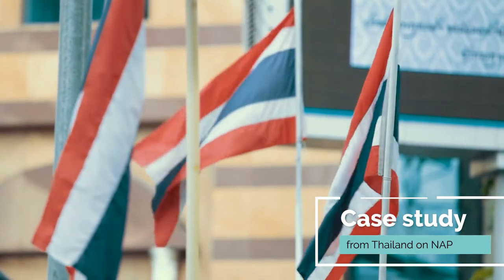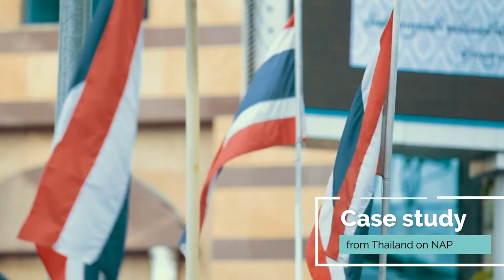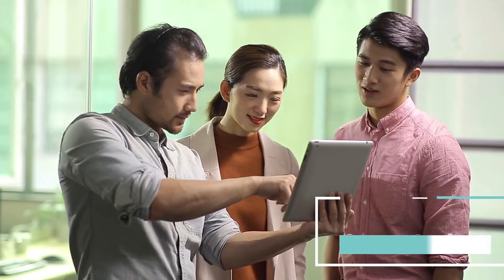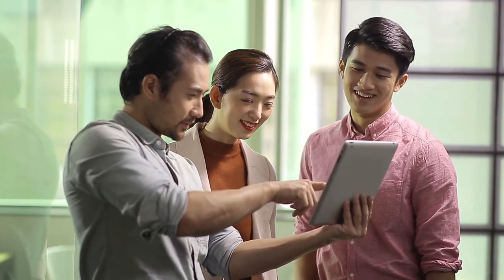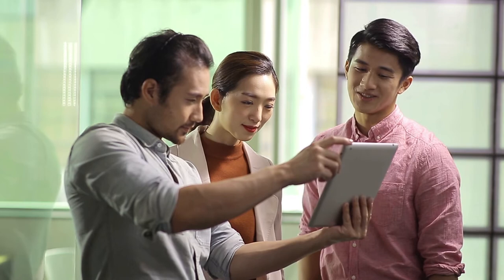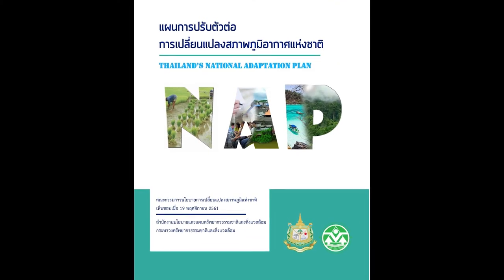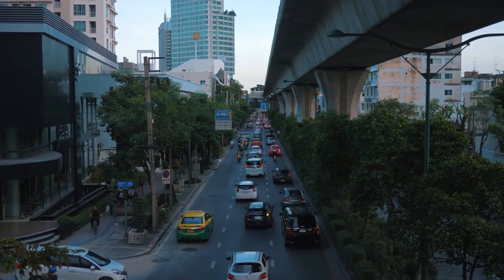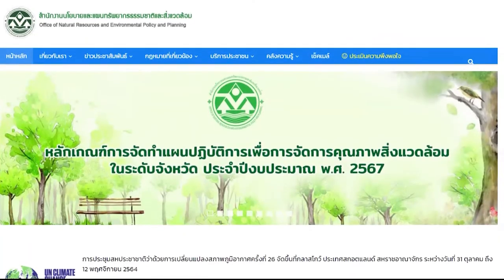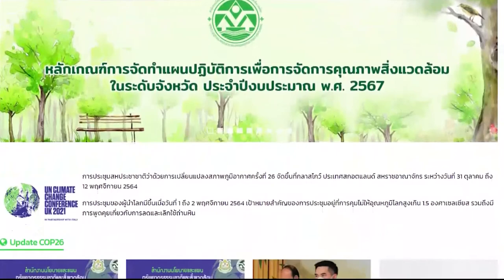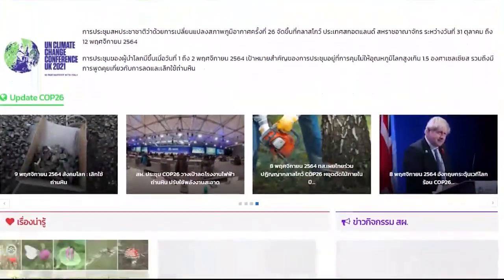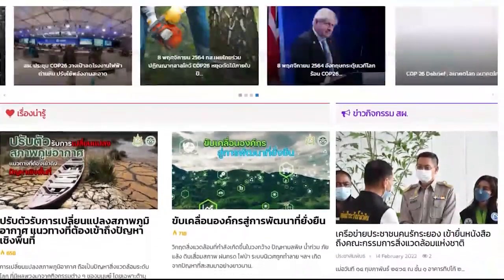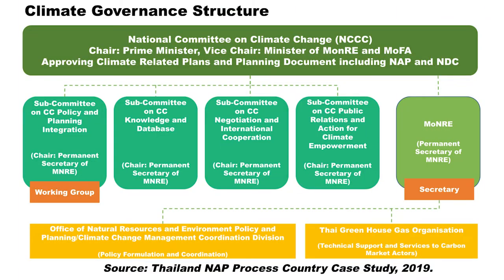Now let's look at a case study from Thailand on the formulation and implementation of the National Adaptation Plan. Please note that the NAP guidelines are not prescriptive; rather, they are adaptable based on the circumstances of various countries. Thailand initiated the National Adaptation Plan process in 2015 and it was approved by the National Committee on Climate Change Policy in 2018. The key operational body in Thailand on climate change is the Office of Natural Resources and Environmental Policy and Planning, or ONEP, within the Ministry of Natural Resources and Environment. The Climate Change Management and Coordination Division of ONEP leads the climate change efforts, including the development of the National Adaptation Plan.